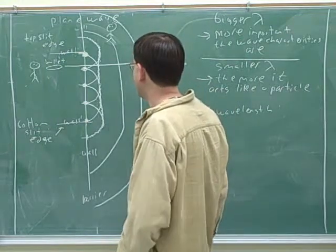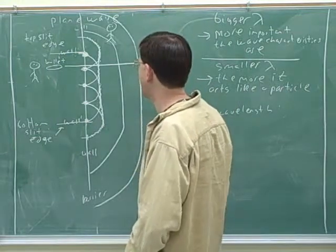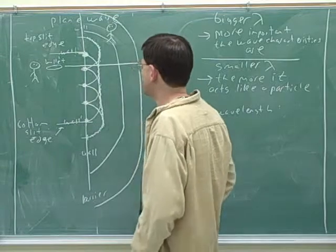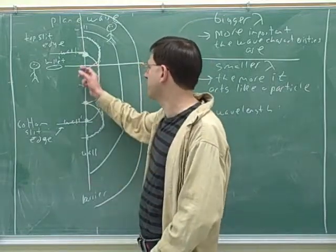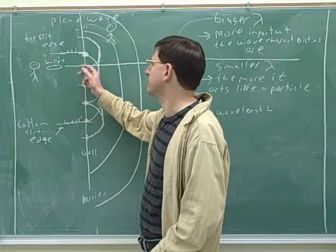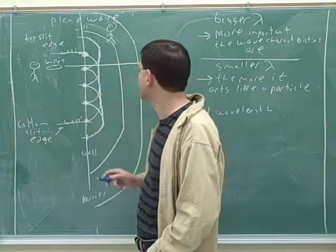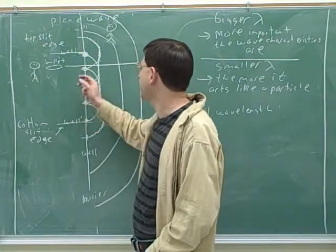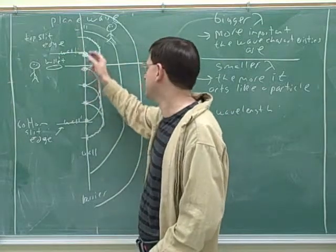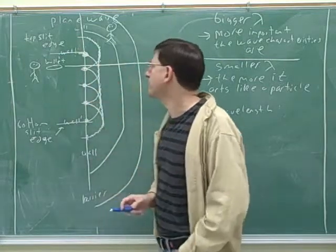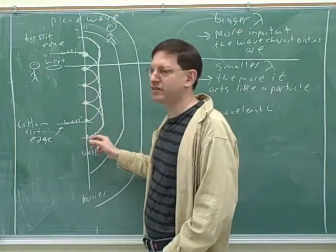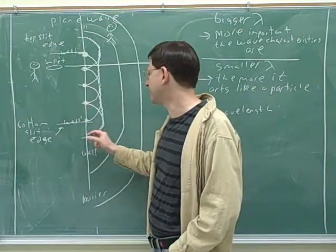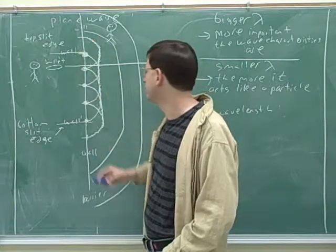So we've used Huygens' Principle to explain two things. So again, Huygens' Principle says that every point on the wavefront is like a source of a new spherical wave. And we used that to explain why a plane wave stays planar, because the tangent to the spheres stays planar. But we've also used that to explain why when the plane wave goes through a slit, it bends at the edges, because there's nothing to balance off the curves at the edges over here.